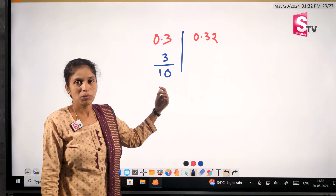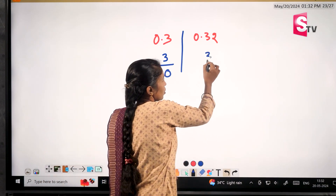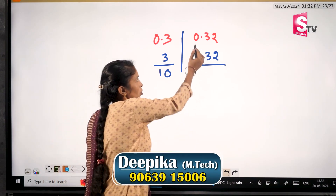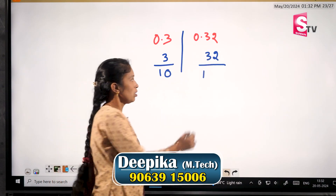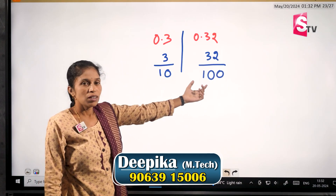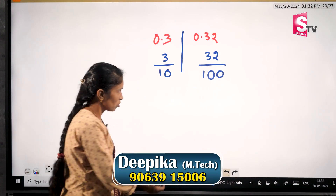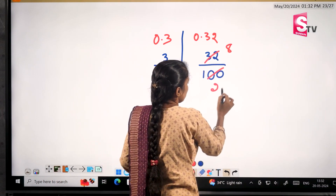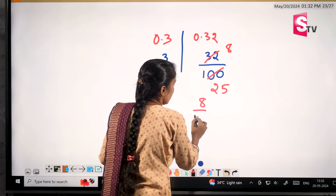If we divide by 3 to 10, we will add an asterisk. In the next question, we will convert 0.32. The point place is 1, point place is 2 digits — 2 zeros. Here we will divide by divisible. If we divide by 2 and 4, we get 8 zeros and 25 zeros. So the ratio form is 8 by 25.